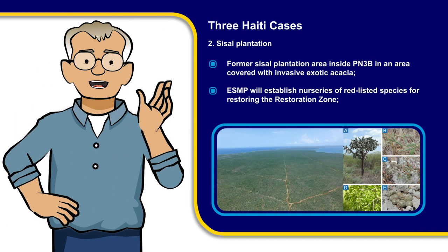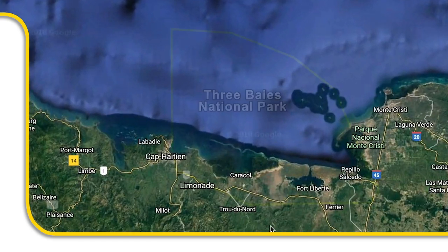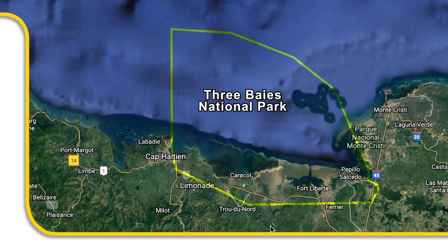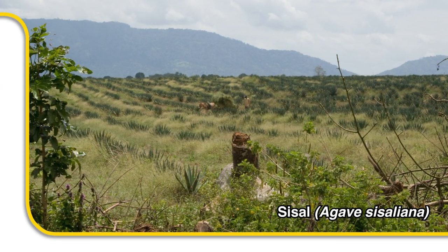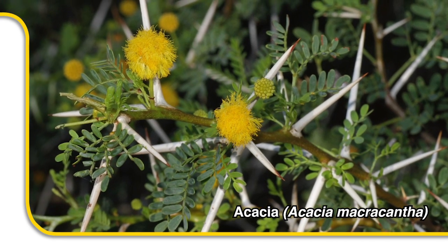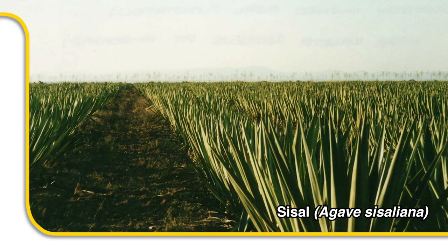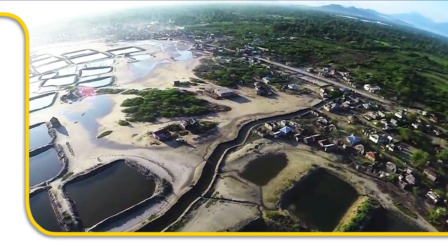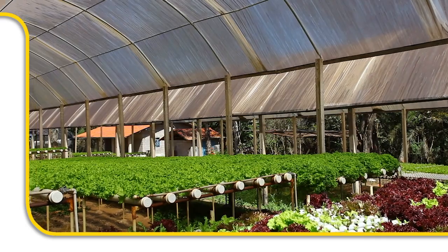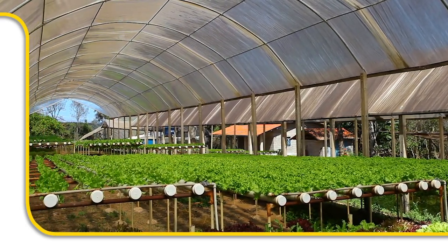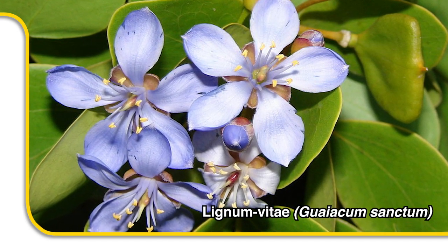Another example from the same island nation comes from a project to establish a sisal plantation in an area of extreme poverty within the newly established Trois Bay National Park. The area to be planted was in an already degraded area that had previously been managed for sisal, but had since become overgrown with an invasive exotic acacia species which threatened the park's native flora and fauna. The team decided that a well-managed sisal plantation in this severely degraded area that eliminated the exotic invasive plants and established a nursery to propagate five IUCN red-listed plant species for transplanting into the park's restoration zone would be a win-win for biodiversity and for local people.